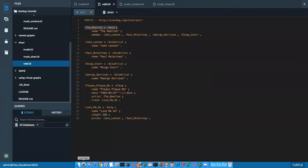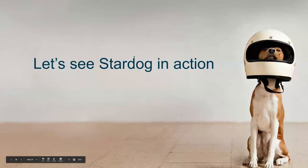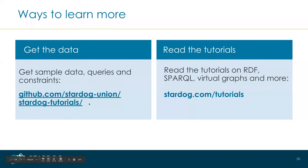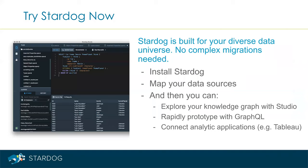The data files and example shapes are all available on GitHub — you can check out this repo and try these on your own, see the details of the shapes and constraints. We also have additional tutorials on our website about RDF, SPARQL, and Virtual Graphs. You can download Stardog and play with other features it offers, like GraphQL queries, virtual graphs, or connecting to tools like the Tableau analytics application.